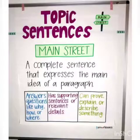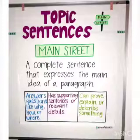All of these points have been discussed. Topic sentences and concluding sentences both have significance while writing a paragraph. A complete sentence that expresses the main idea of the paragraph answers questions like why, how, where, and has supporting sentences or relevant details. Basically, the starting of the paragraph and the ending of the paragraph has to be effective.